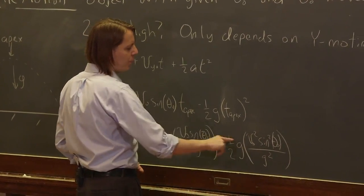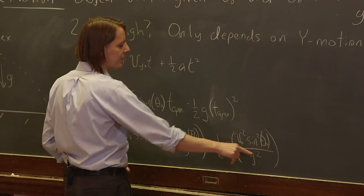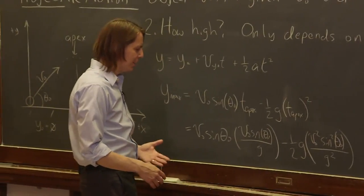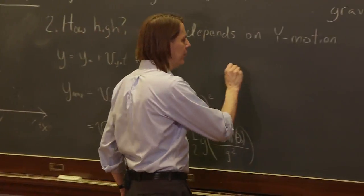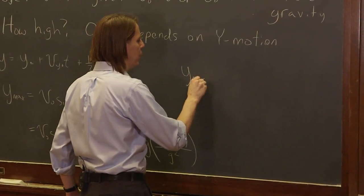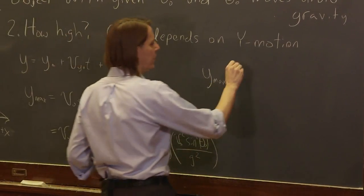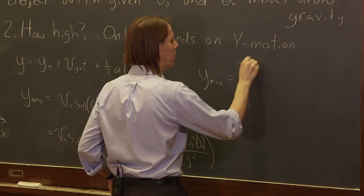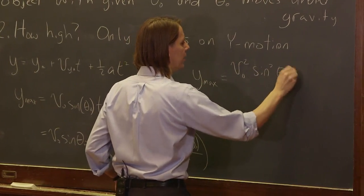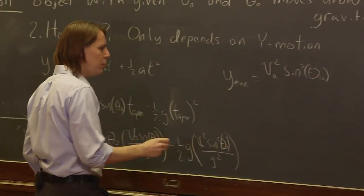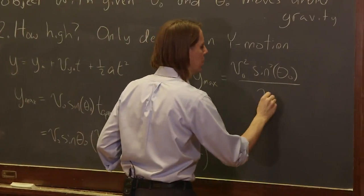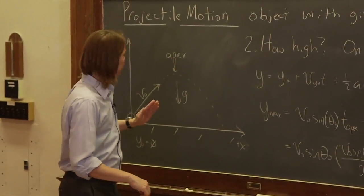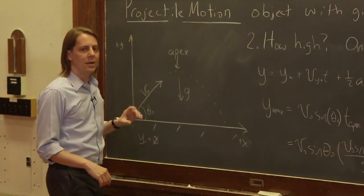It really just ends up dividing by two and what you find out with a little algebra is that y max is v naught squared sine squared theta naught over 2g. That is how high it goes based on just the initial conditions v naught and theta naught.